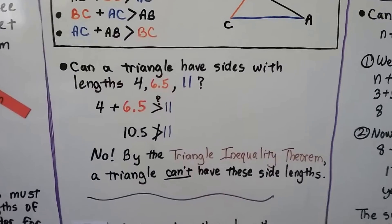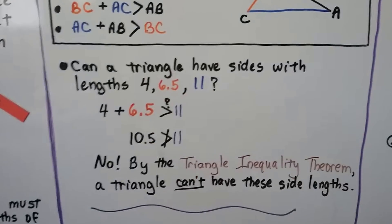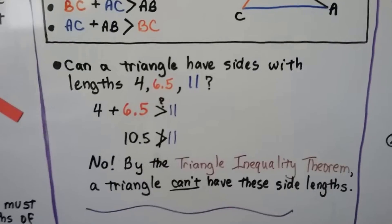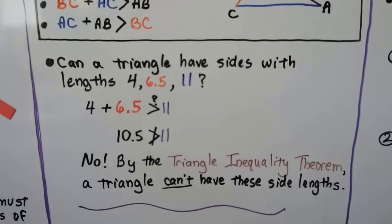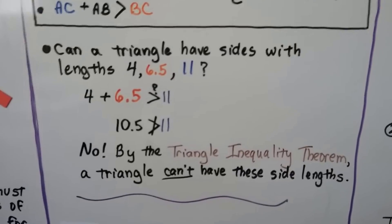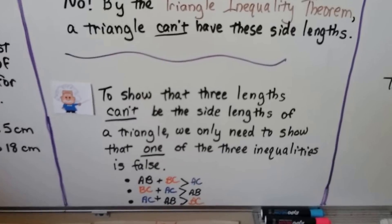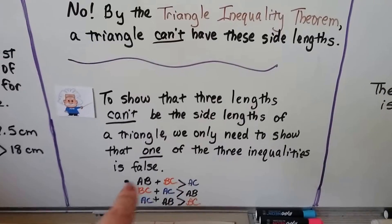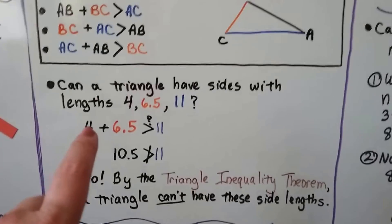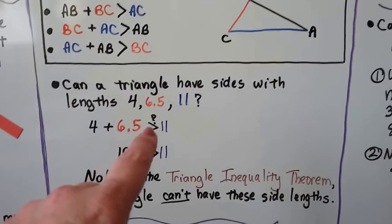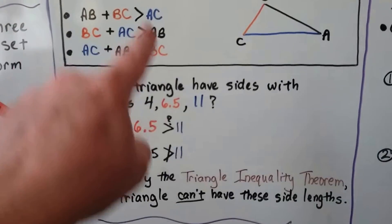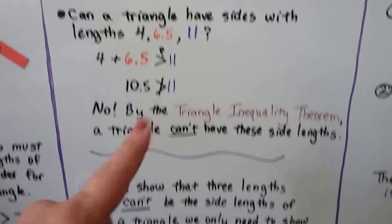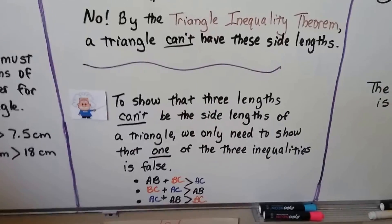Can a triangle have sides with lengths 4, 6.5, 11? We can add the 4 to the 6.5 and get 10.5. That's not greater than 11, so no. By the triangle inequality theorem, a triangle can't have these side lengths. To show that three lengths can't be the side lengths of a triangle, we only need to show that one of the three inequalities is false. In this case, it was the first one: AB plus BC is not greater than AC. That's why it didn't work.